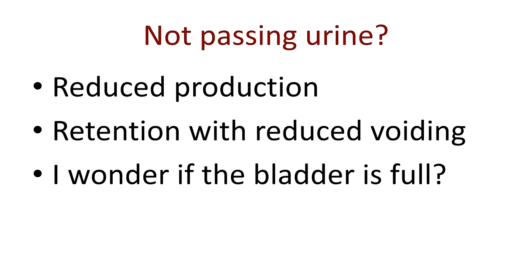If someone is not passing urine, we need to decide whether the kidney is not producing urine, or whether the kidney is producing urine but it's being retained in the bladder. There are times when you haven't passed urine for several hours not because of acute kidney injury, but simply because you haven't emptied your bladder. There are also pathological conditions which make voiding of urine difficult or virtually impossible, so we need to differentiate between reduced production and retention of urine.